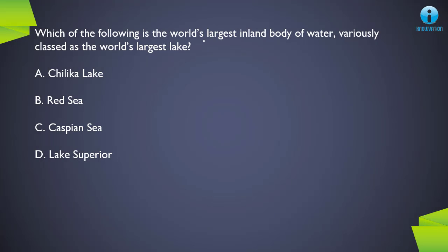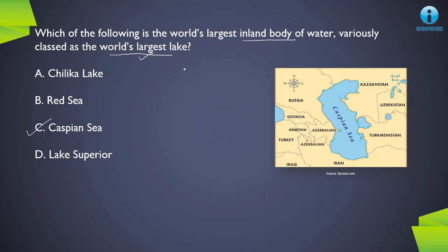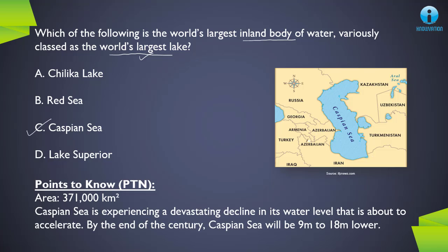First question: which of the following is the world's largest inland body of water, variously classed as the world's largest lake? An inland water body means it is landlocked — surrounded by land on all sides. The correct answer is C, Caspian Sea. You can see it on the map: it is surrounded by Russia, Kazakhstan, Turkmenistan, Iran, and Azerbaijan. The area of the Caspian Sea is around 371,000 square kilometers. Importantly, the Caspian Sea is experiencing a devastating decline in its water level, and by the end of this century, the water level might reduce by 9 to 18 meters.